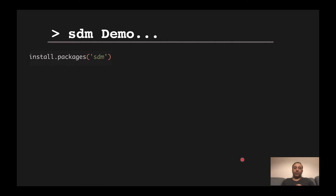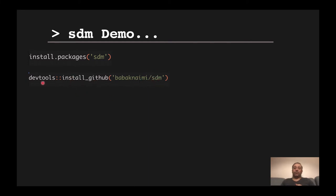To install the package, you can simply use install.packages() with the name of the package — it's available on CRAN. The developer version is also available on GitHub and usually has a newer version, so if you want the latest version you can try that one.